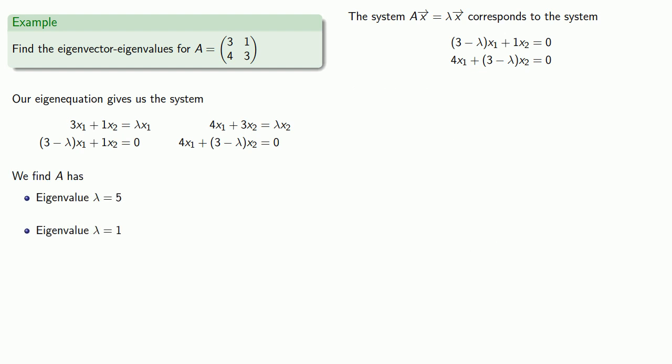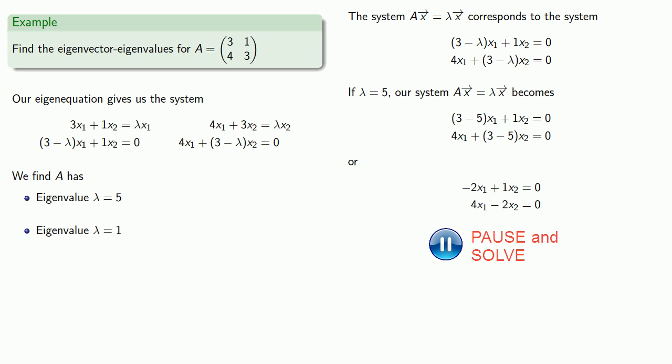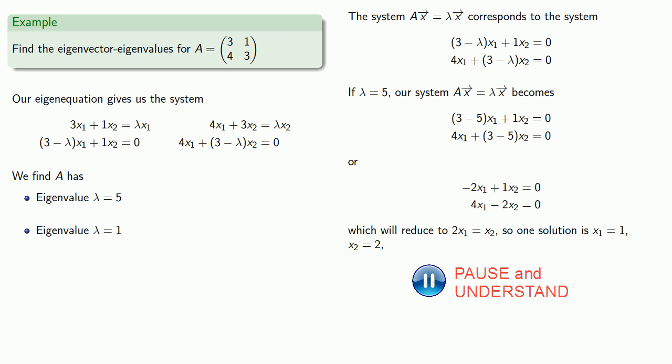Now, if lambda equals 5, our system ax equals lambda x becomes, or, if we simplify it, this will be, if we solve this system, we'll reduce it to 2x1 equals x2. So one solution is going to be x1 equals 1, x2 equals 2, which gives us the eigenvector.